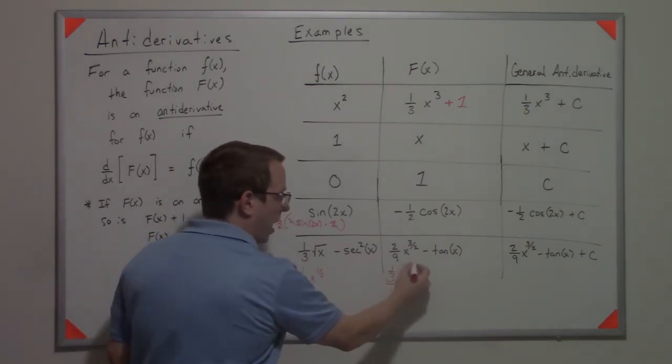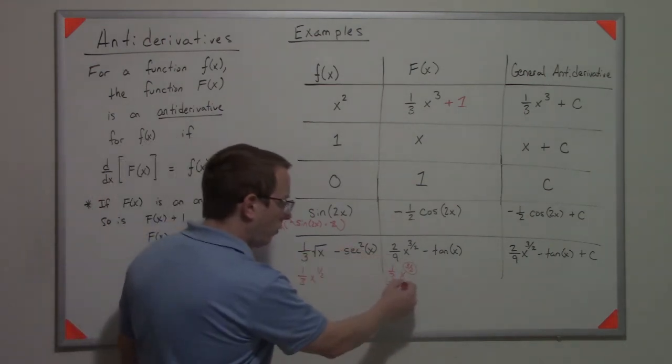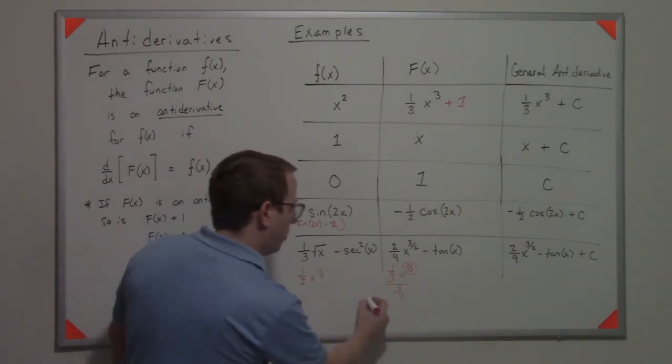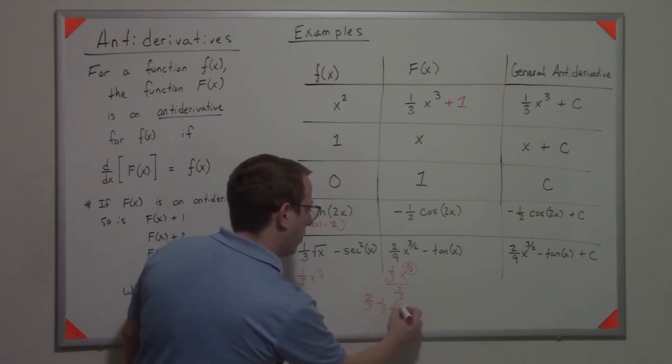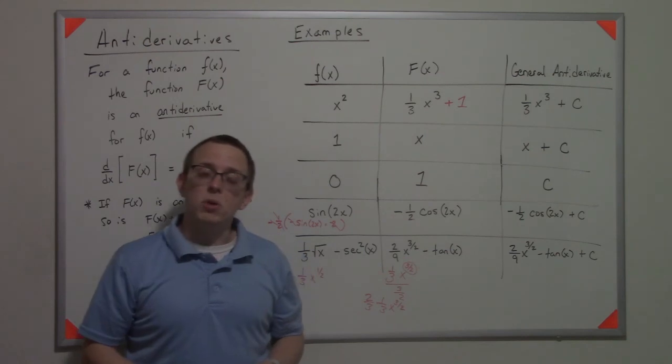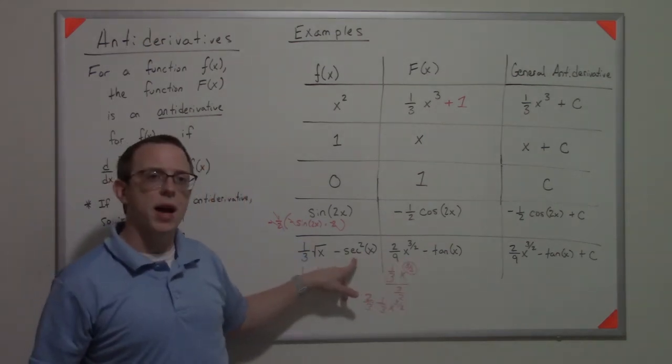When I rearrange this and multiply by reciprocals, that's going to be the same as 2/3 times 1/3 x to the three-halves. Similarly, we know that tangent derives to sec²(x), so since tangent derives to sec²(x), it's the antiderivative.